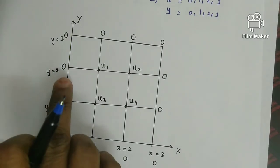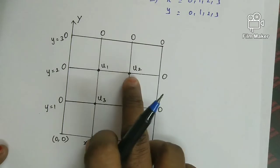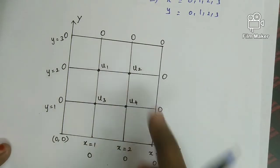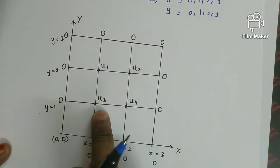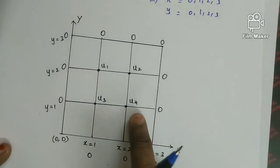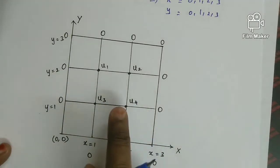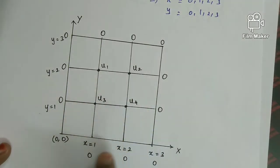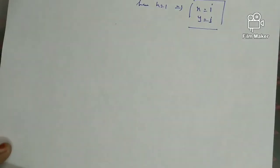The next point is u2, where i equals 2 and j equals 2, so x equals 2 and y equals 2. Then u3 has i equals 1 and j equals 1. And u4 has i equals 2 and j equals 1. We substitute these four interior points into the formula to obtain a system of equations.